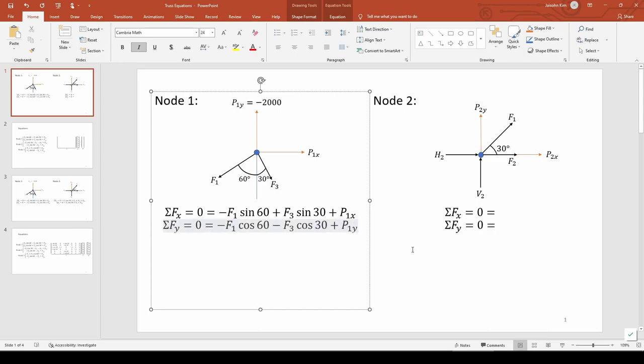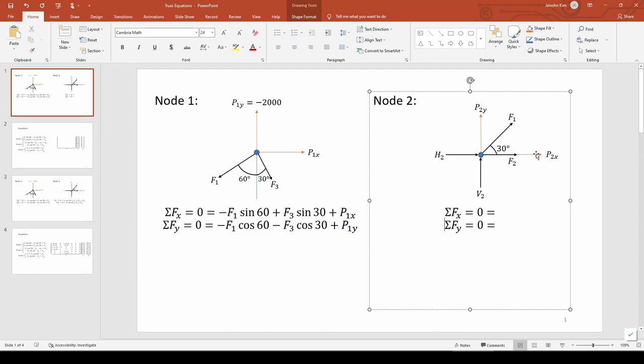For node 2, we have F1 and F2 pointing out of the node, the two reaction forces, and the two externally applied forces which are technically both zero. Either V2 or F1 actually points in the opposite direction since the y forces must sum to zero, but like I said, we can freely assume the directions without penalty because all the minus signs will eventually handle themselves once we're in MATLAB. Now we can proceed with the force balance.